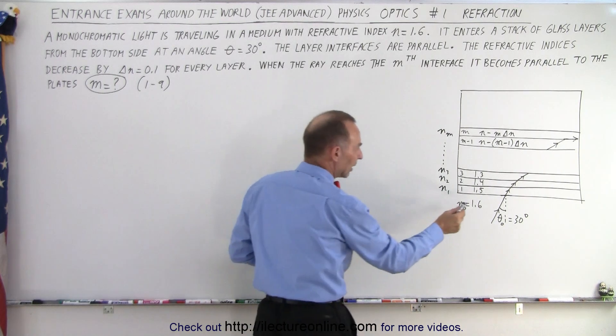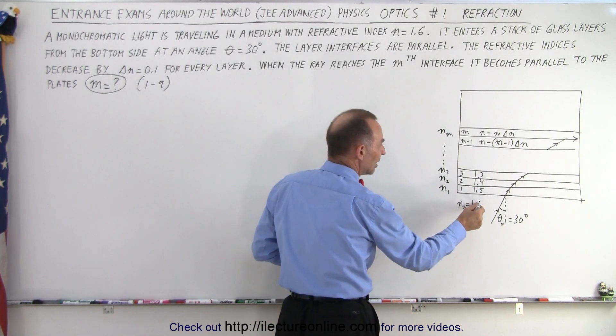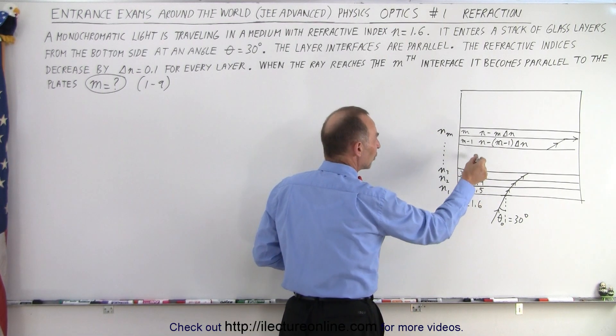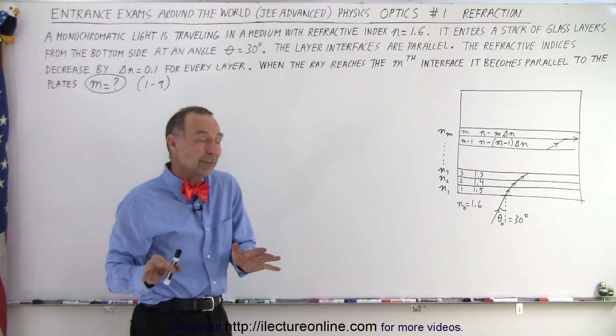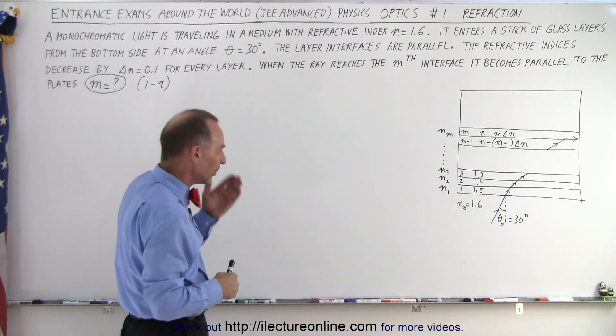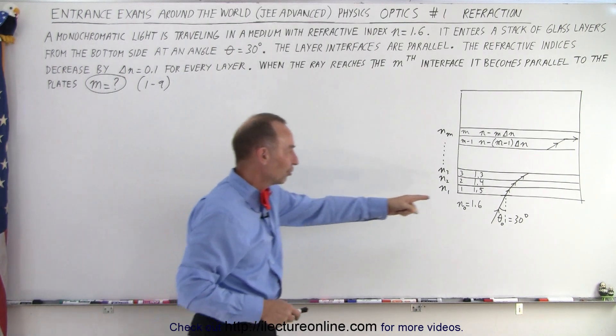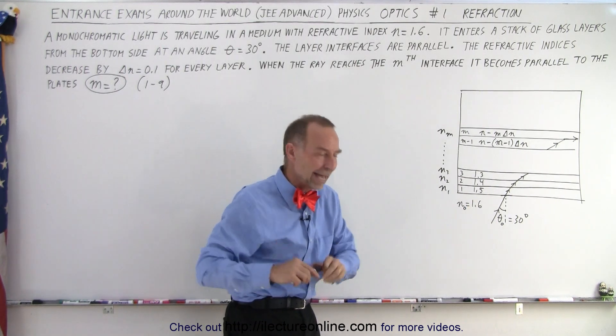Notice again that each layer, the index of refraction decreases by 0.1 as we go through each of the layers. This is not necessarily a realistic problem, it's just a problem that we need to solve. So how do we go about doing that? Well, let's start with the first interface to see if we can see a pattern.